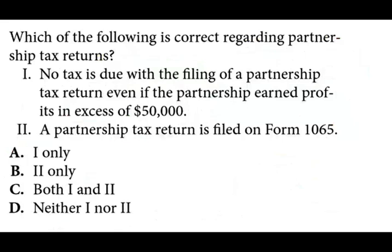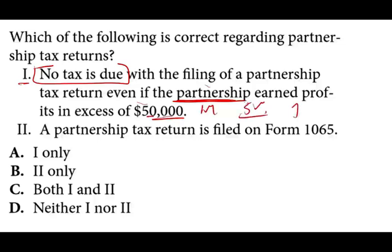Next question: which of the following is correct regarding the partnership tax return? Choice one states no tax return is due with the filing of a partnership tax return, even if the partnership earned profit in excess of $50,000. The answer is yes — the partnership does not pay any taxes, period. Whether they earned $50,000, a million, $5 million, or $1, there is no tax due. The partnership is only an informational return — Form 1065. Therefore, choice one is correct, and we can eliminate B and D immediately.